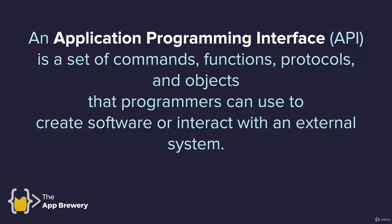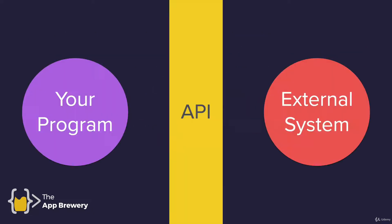In the upcoming lessons, what we're going to be focusing on is interacting with external systems. Namely, we're going to try and interact with various websites and pull live data from those websites. Essentially, the API is an interface — or rather a sort of barrier — between your program and an external system.